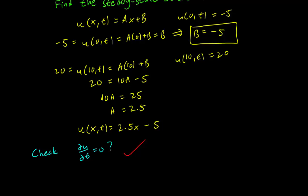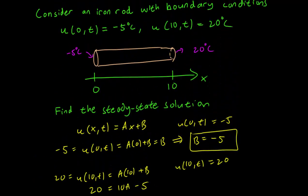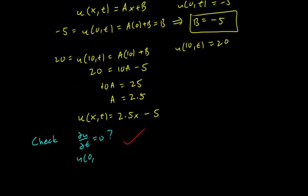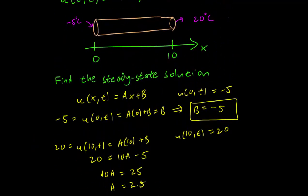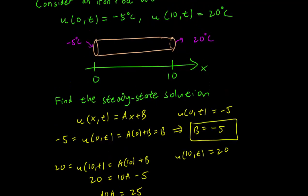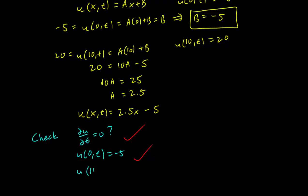Let's also check the first boundary value. We have that the left boundary, u(0,t) is minus 5. So we plug in 0 here in our equation. We do get minus 5, so this also works. And let's check the right boundary condition. We have u(10,t) equals 20. We plug in 10 for our solution, and we get u equals 25 minus 5, which equals 20. So that also checks out.